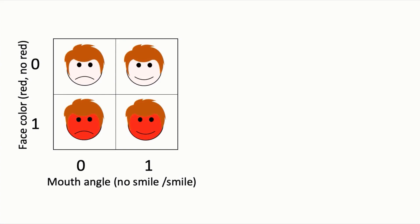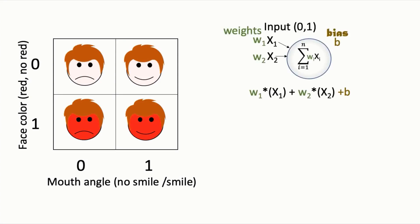The AND and OR problems are actually linearly separable, so they are problems that our perceptron model can solve. Our perceptron model works like this: it waits for two-dimensional input — mouth angle, represented as X1, and face color, represented as X2. The perceptron will find values of weights W1 and W2 so that W1 times X1 plus W2 times X2 plus a bias term B creates a plane that separates truth from bluff.